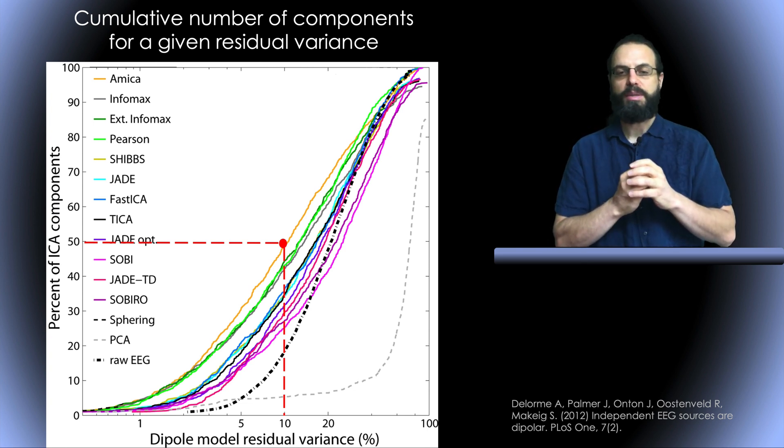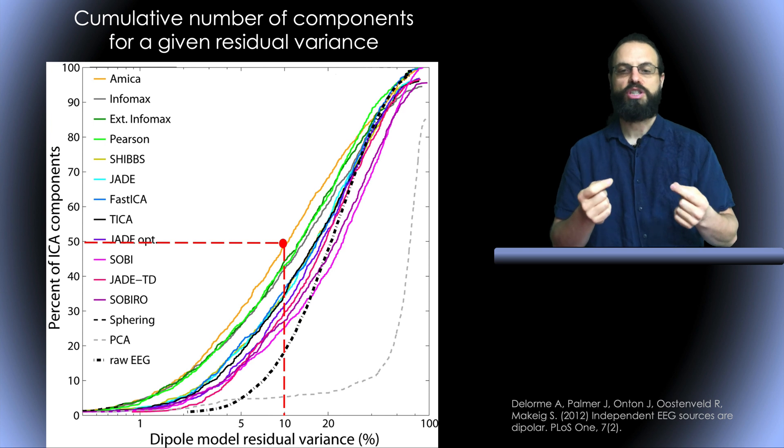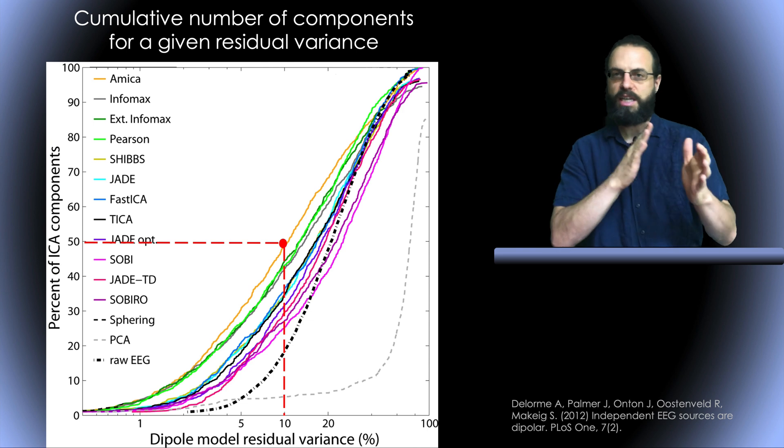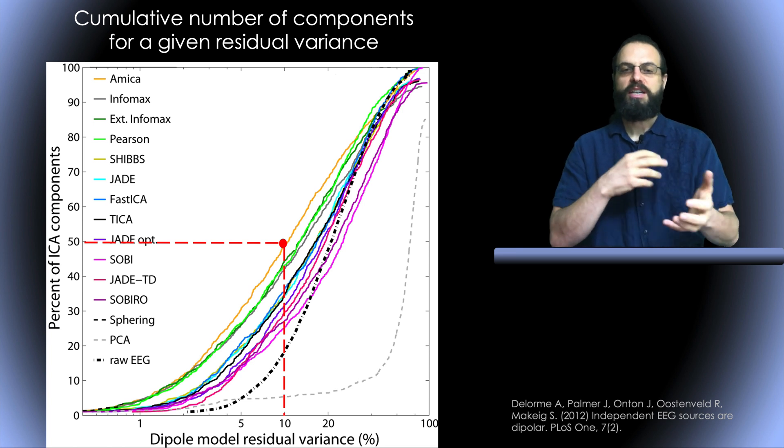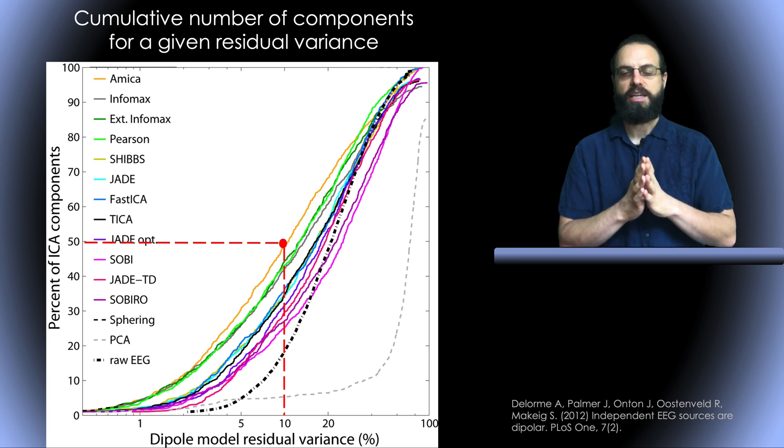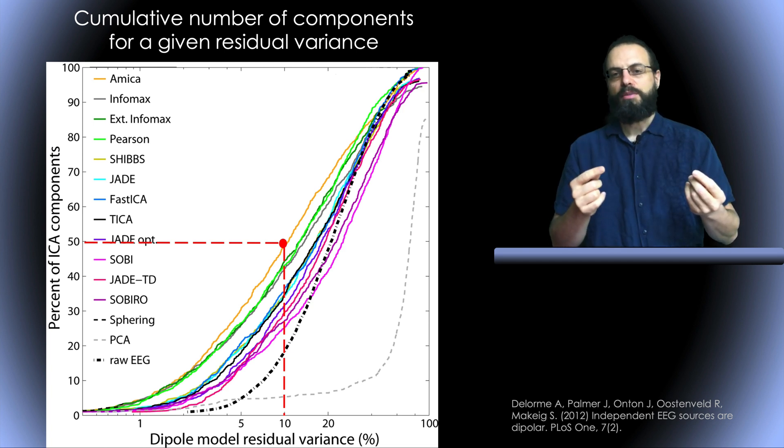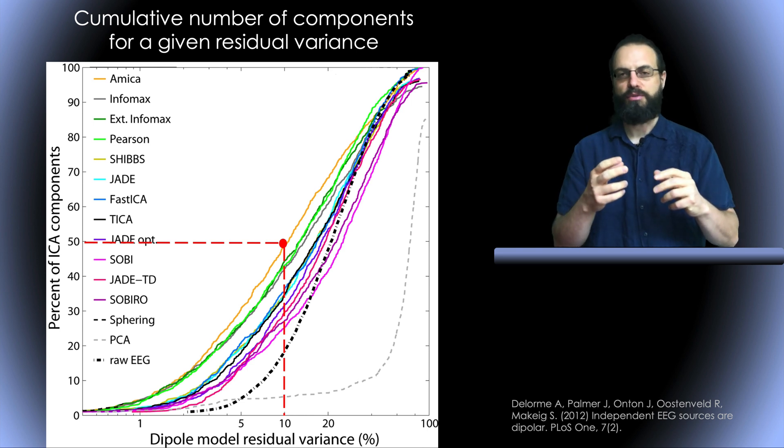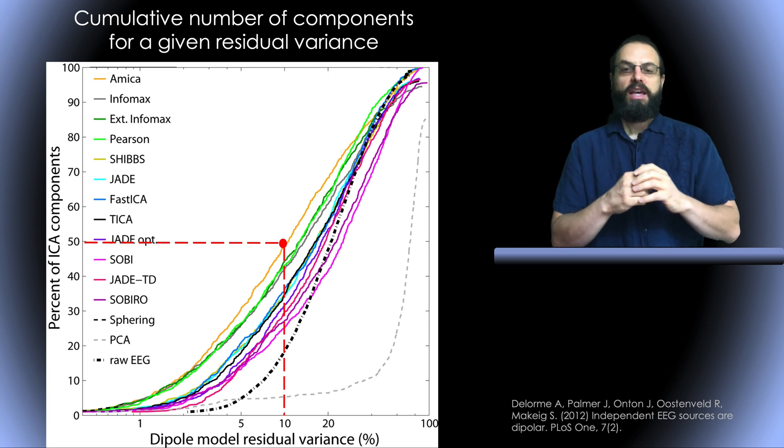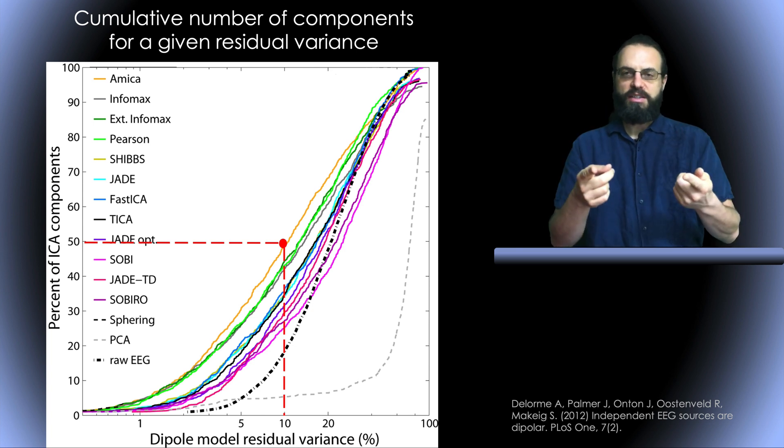We also have the other dotted line, which is the raw EEG. When we sample the raw EEG at random latency, we can see how it looks. Basically it's not as dipolar as the ICA components. It doesn't mean that because you're on top of the curve, you're necessarily doing better. There's some caveats which we explained in the paper about whitening, for example. I invite you to read the paper if you're interested in that.